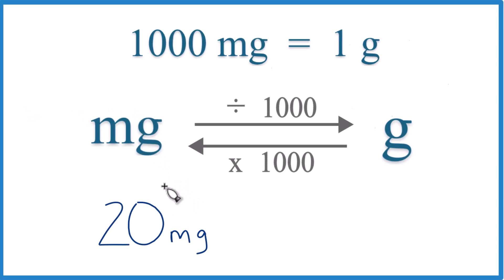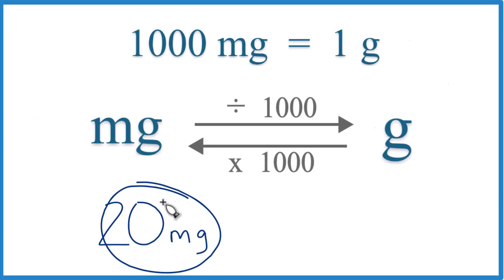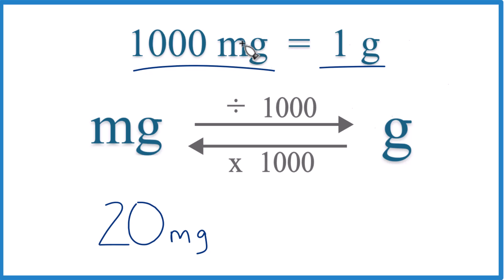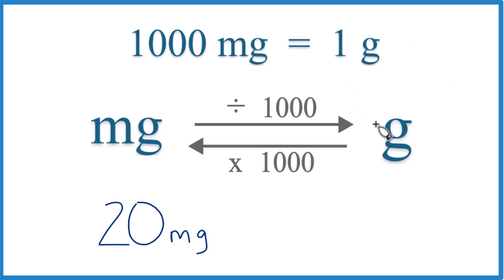Let's convert 20 milligrams to grams. First off, you need to know that there are 1,000 milligrams in 1 gram — 1 gram equals 1,000 milligrams. We call that a conversion factor, and we use it when we go from milligrams to grams or grams to milligrams.